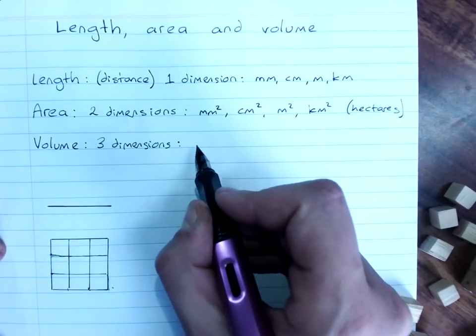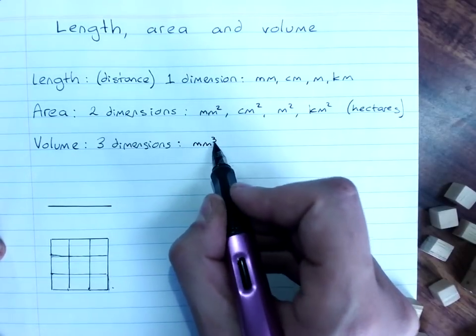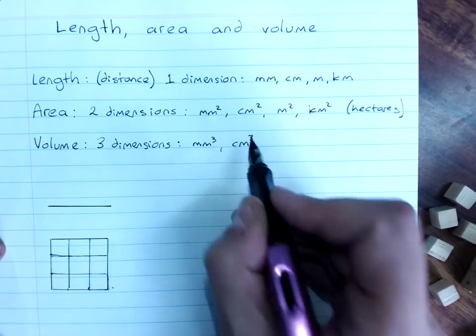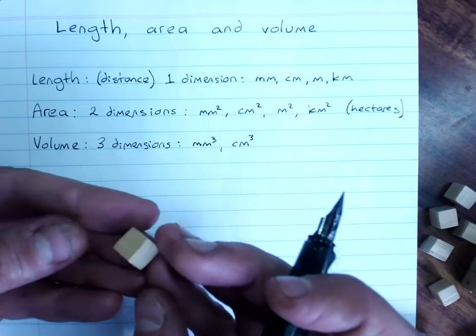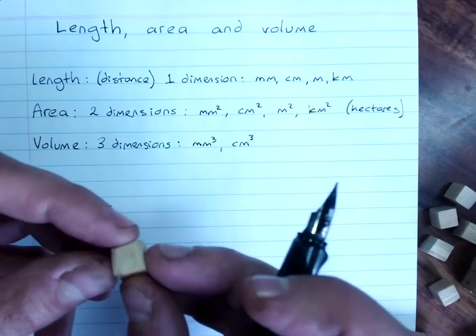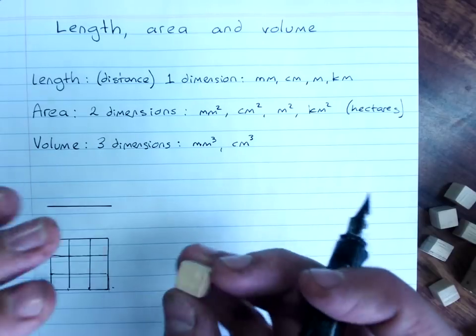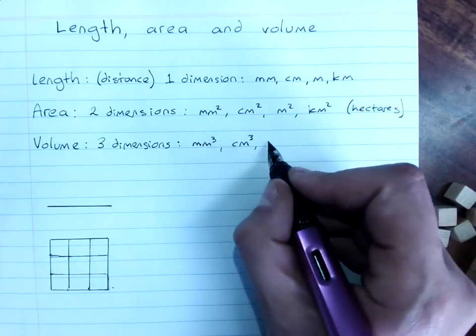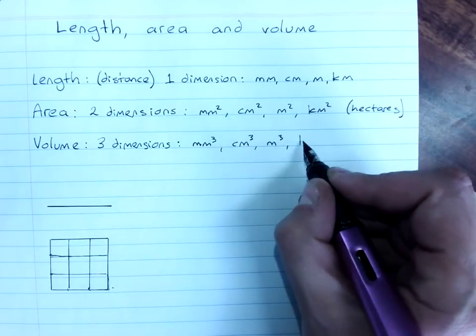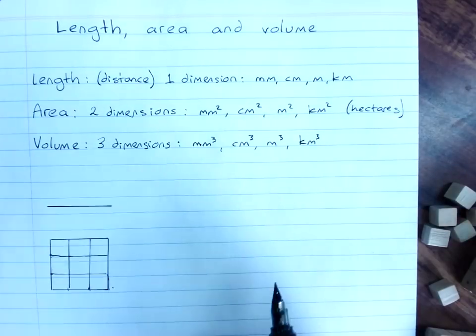And my units are millimeters cubed, centimeters cubed. So, this is one centimeter cubed, thereabouts, because it's a cubed space made up of one centimeter by one centimeter by one centimeter. Meters cubed, and even kilometers cubed, although that's pretty big.